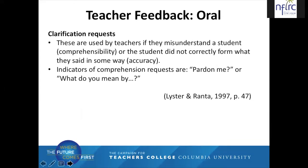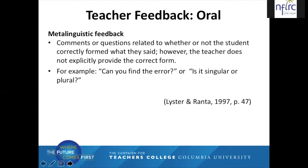Kinds of oral feedback also include clarification requests. These are used by teachers if they misunderstand a student — a comprehensibility issue — or the student did not correctly form what they said — an accuracy concern. Indicators of comprehension requests are things like 'pardon me' or 'what do you mean by...' Next, we'll look at metalinguistic feedback. These are comments or questions related to whether or not the student correctly formed what they said. However, the teacher does not explicitly provide the correct form. The teacher might say, 'Can you find the error?' or 'Is it singular or plural?'